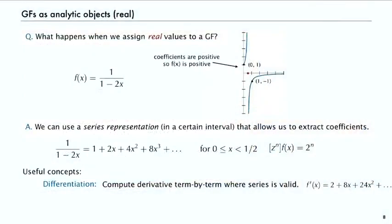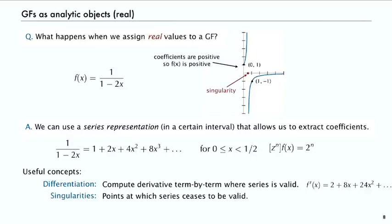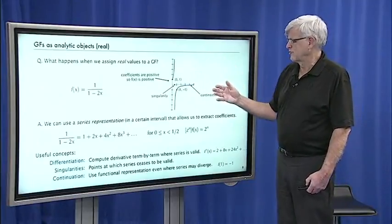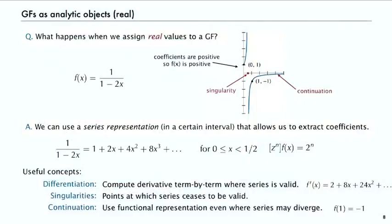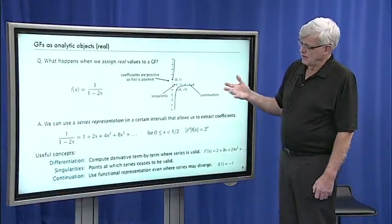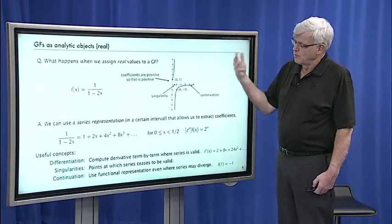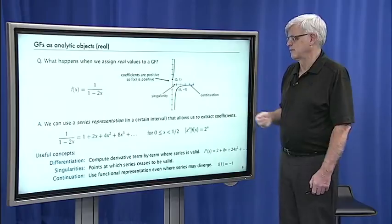We have the idea of analytic continuation: we can take that function and evaluate it even where the series is not valid. For example, f of 1 equals minus 1 just by plugging in x equals 1, and everywhere except at the singularity we can compute a value of the function. Through continuation we open up more analytic manipulations to get the results we want. The same thing happens in the complex plane — we still have singularities, a series representation valid in some domain, and we can differentiate, identify singularities, and continue beyond where the series diverges.